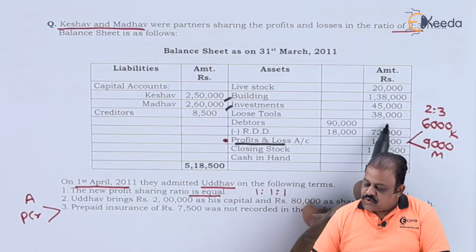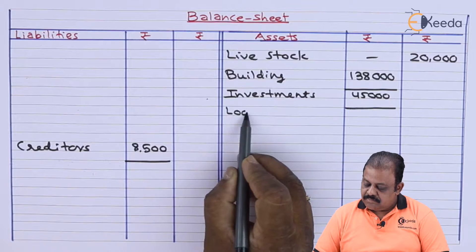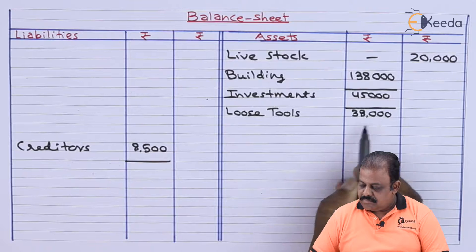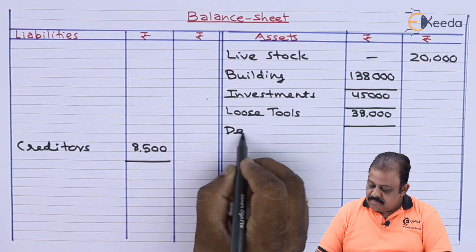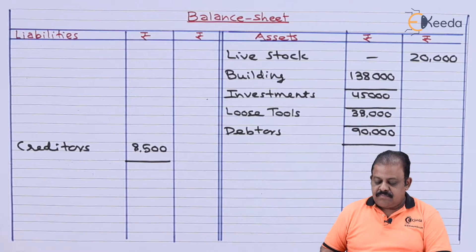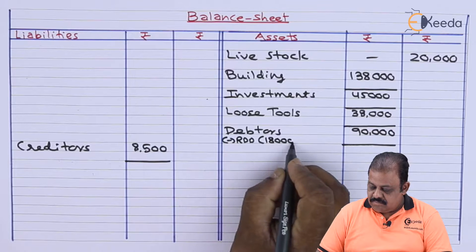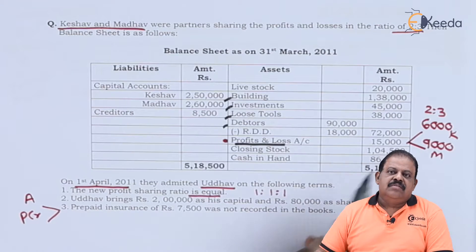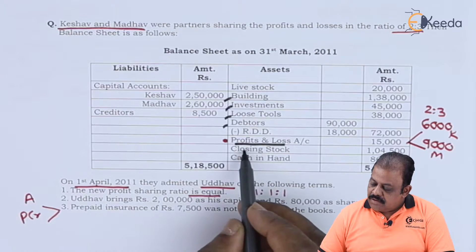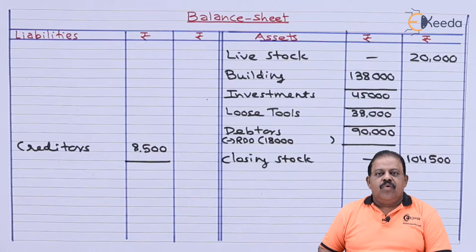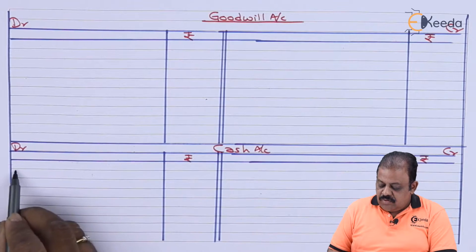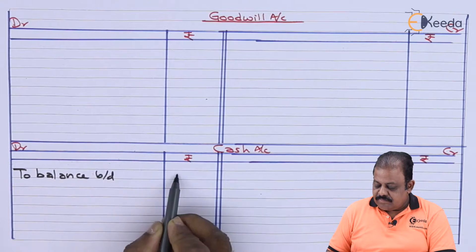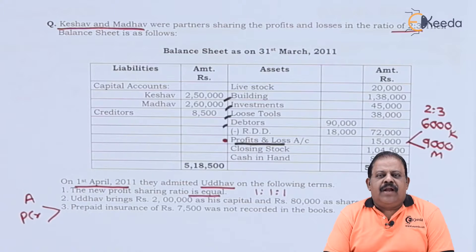Investments are 45,000 in the new balance sheet inner column. Loose tools are 38,000 — there is an adjustment. Debtors are 90,000 less RDD 18,000 — there is an adjustment on RDD. Closing stock is 1 lakh 4,500. Cash in hand is 86,000. We have prepared this as a working note with cash account opening balance of 86,000. All items from the balance sheet have been posted.